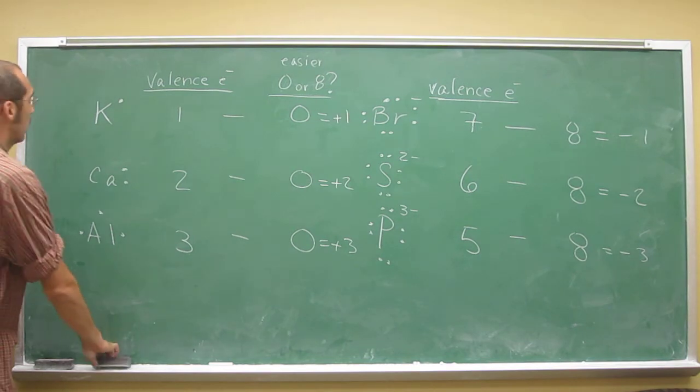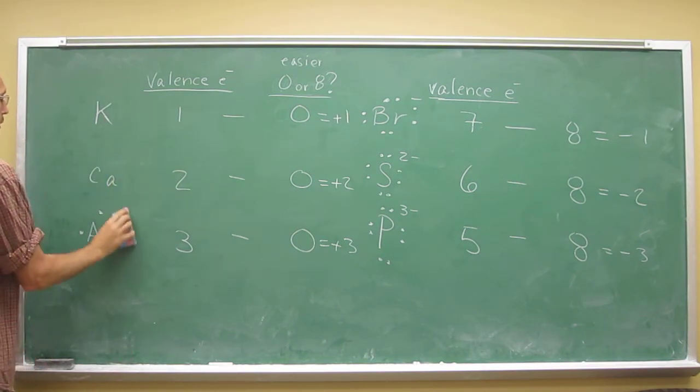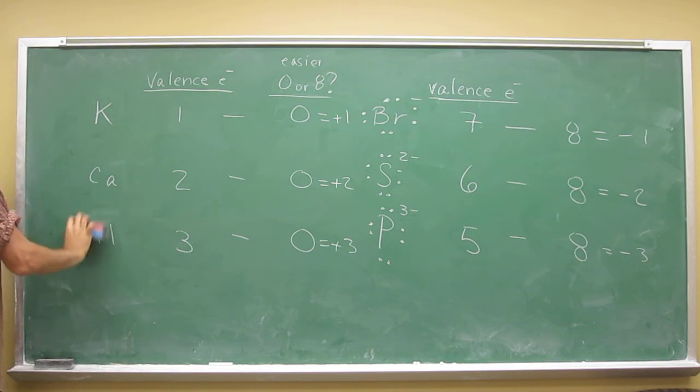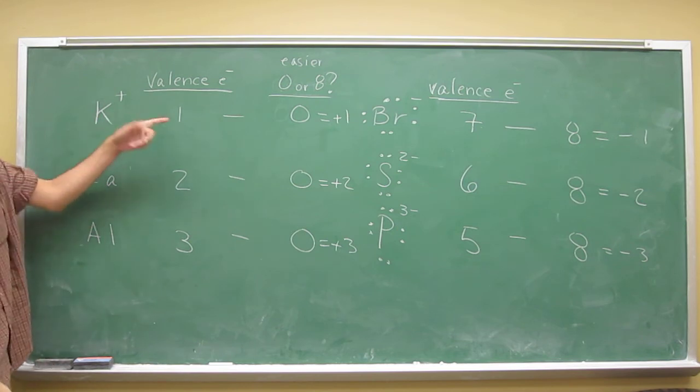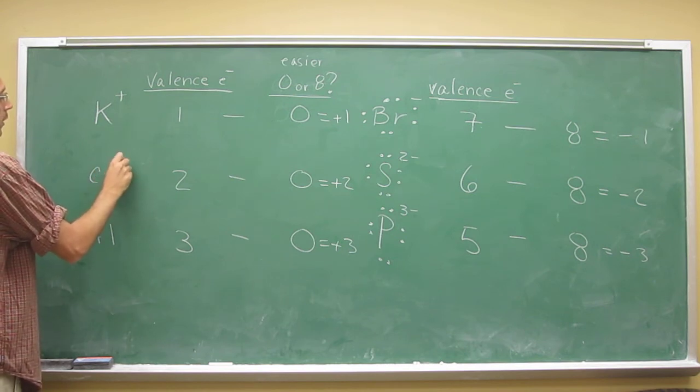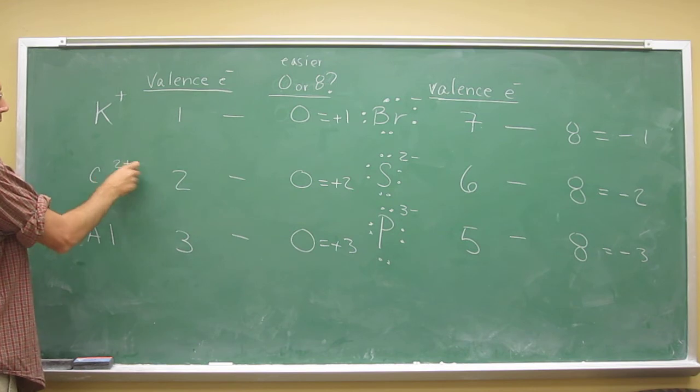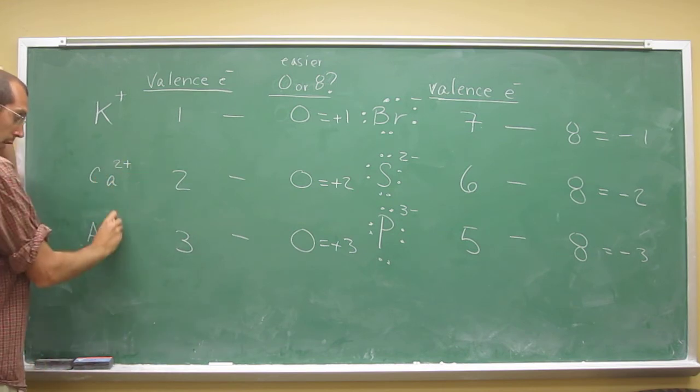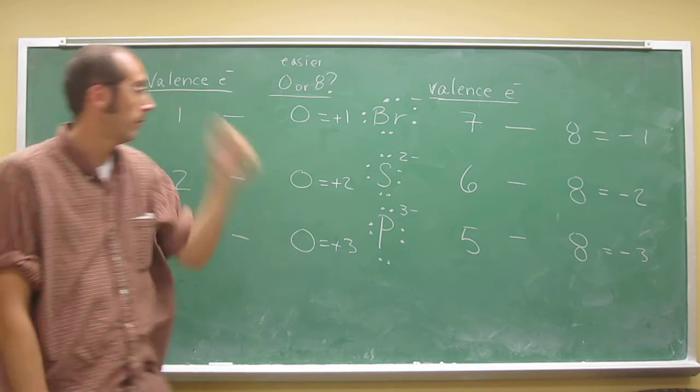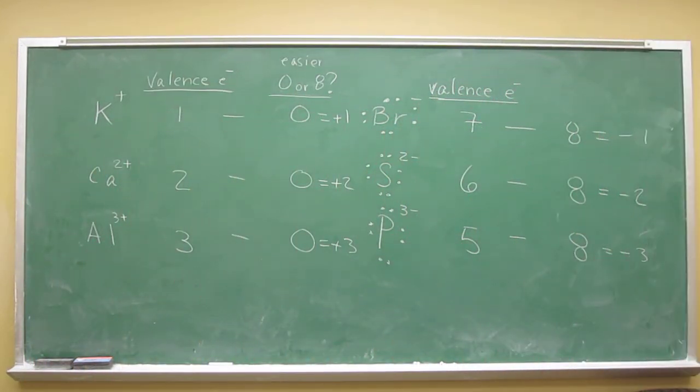So we went from this, right? To having no electrons in all of these guys. But since we lost that one electron, we gained a charge. You gained a positive charge. Lost two electrons. Two plus. Remember, no one. And it's conventional to write the two first. And here, three plus. So that's a pretty good survey of the periodic table.